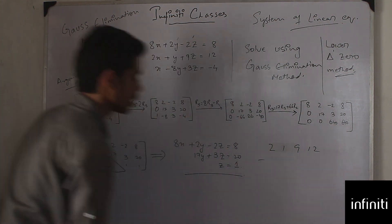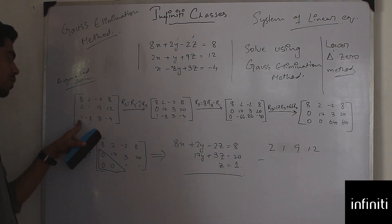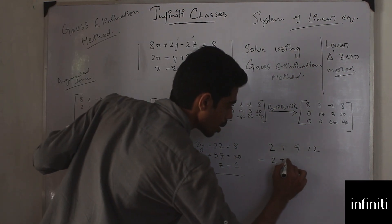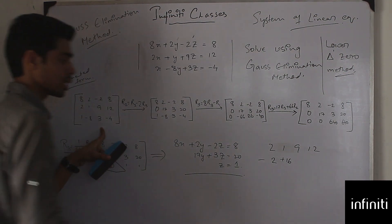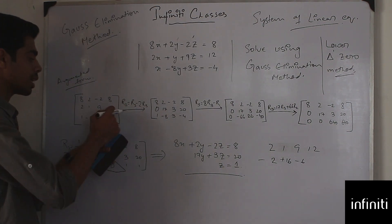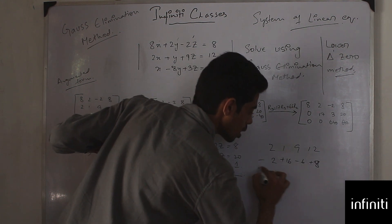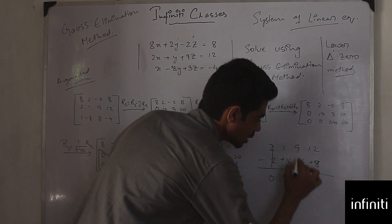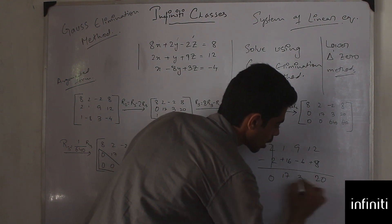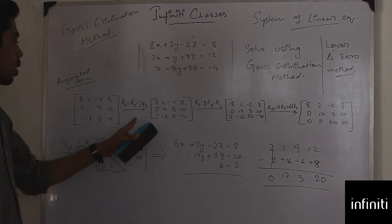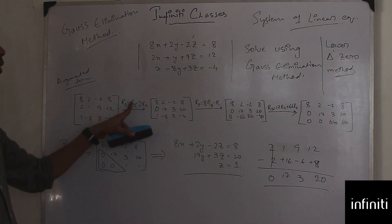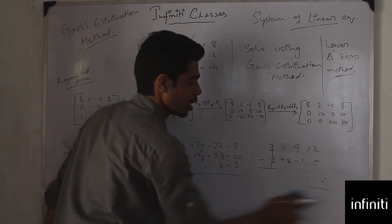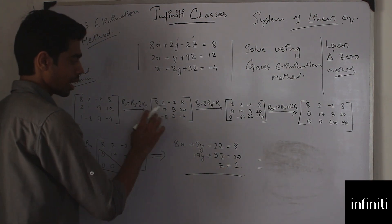I've done R2 minus twice of R3: [2, 1, 9 | 12] minus twice [1, -8, 3 | -4], meaning 1 becomes 2, -8 becomes -16 (which becomes positive 16), 3 becomes 6, and -4 becomes positive 8. After subtracting, I get [0, 17, 3 | 20]. I'll replace R2 with this: [0, 17, 3 | 20].